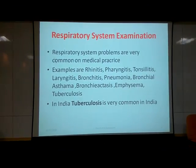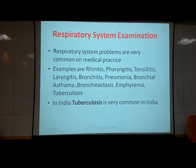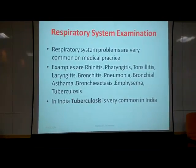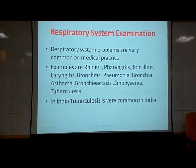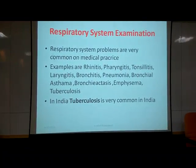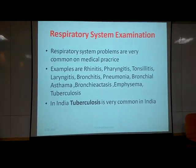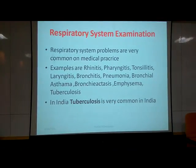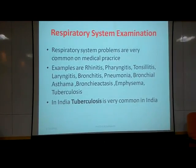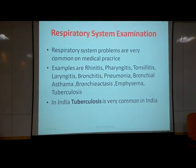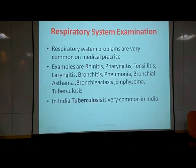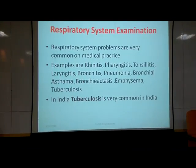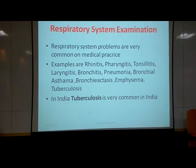Respiratory system diseases are very common in general practice. Here is the list of diseases from the nose up to the lung: rhinitis, pharyngitis, tonsillitis, laryngitis, bronchitis, and when considering lung parenchyma, pneumonia. When considering the bronchus, bronchospasm — that is bronchial asthma — then chronic illnesses like bronchiectasis and emphysema, and last but not least, tuberculosis, which is very common nowadays in India because of the flaring of HIV and AIDS.